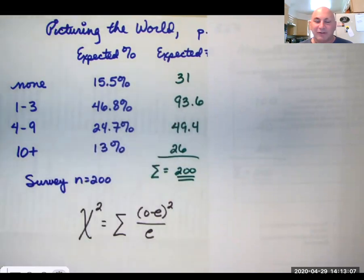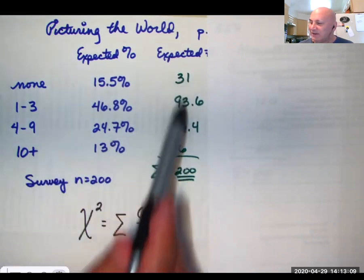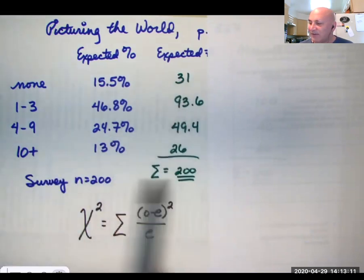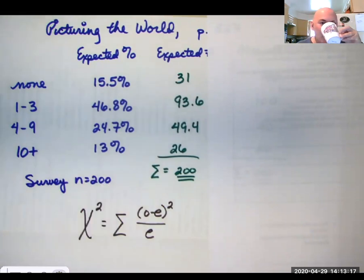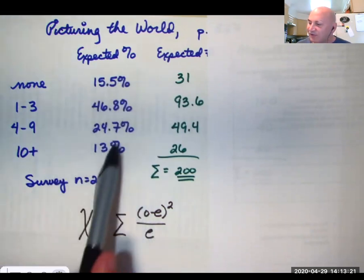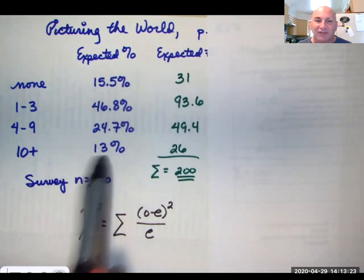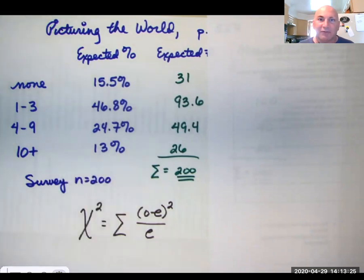Very important, your expected counts always have to add up to your sample size. Otherwise, you've done something very, very wrong. Of course, all these percentages have to add up to 100% also. Or you've done something very, very wrong.